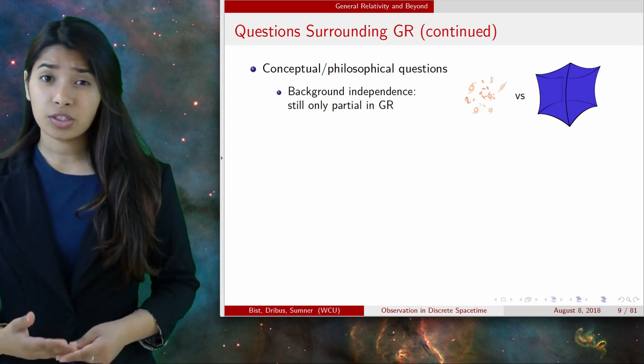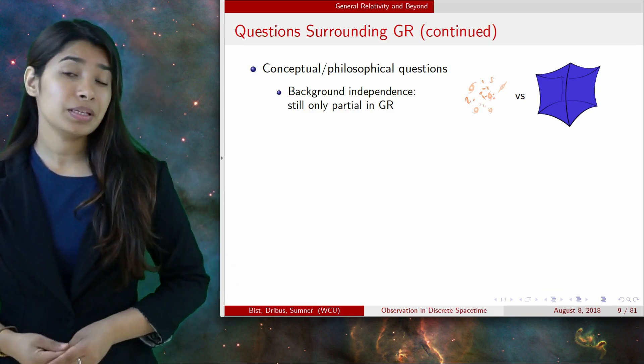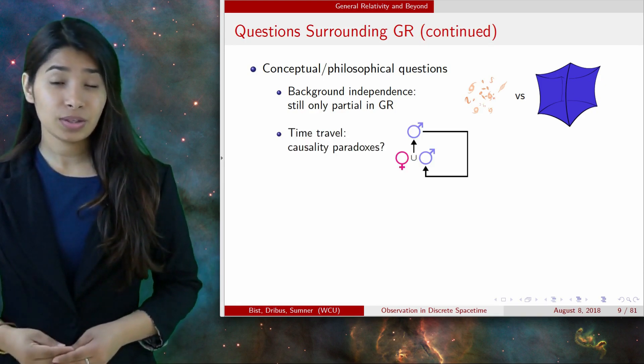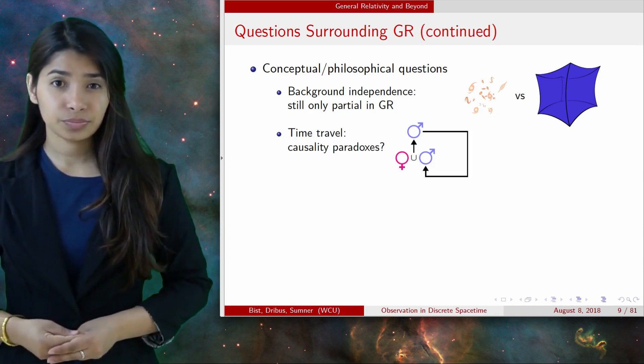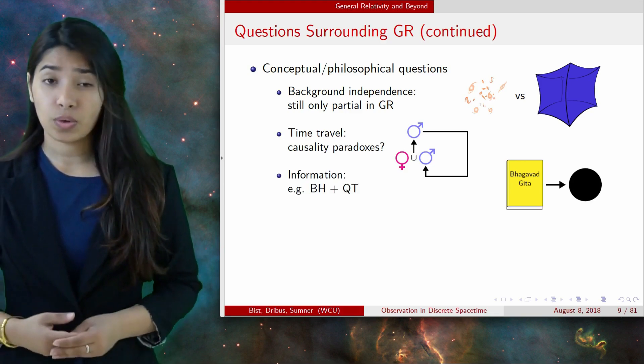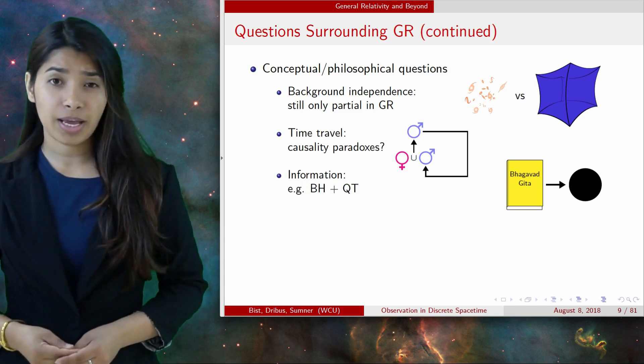One of the consequences of having partial background independence is that we run into paradoxes where matter-energy flows back into the background and clashes with itself. Another potential issue with general relativity and quantum theory is black hole information paradox.